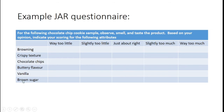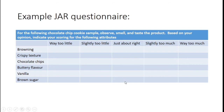We've got positive attributes lined up, and then the spectrum or continuum: 'way too little,' 'slightly too little,' 'just about right' — this is the ideal scenario, with data clustering to the center — then 'slightly too much' and 'way too much.' We have symmetry in the spectrum of possible answers. We're looking for central tendency; ideally everyone ticks down that center line.